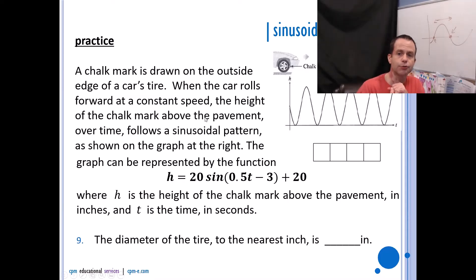A chalk mark is drawn on the outside edge of a car's tire. When the car rolls forward at a constant speed, the height of the chalk mark above the pavement over time follows a sinusoidal pattern as shown on the graph at the right. The graph can be represented by the function h equals 20 sin(0.5t - 3) + 20, where h is the height of the chalk mark above the pavement in inches and t is the time in seconds. Now I'm going to ask you a series of questions with this scenario.